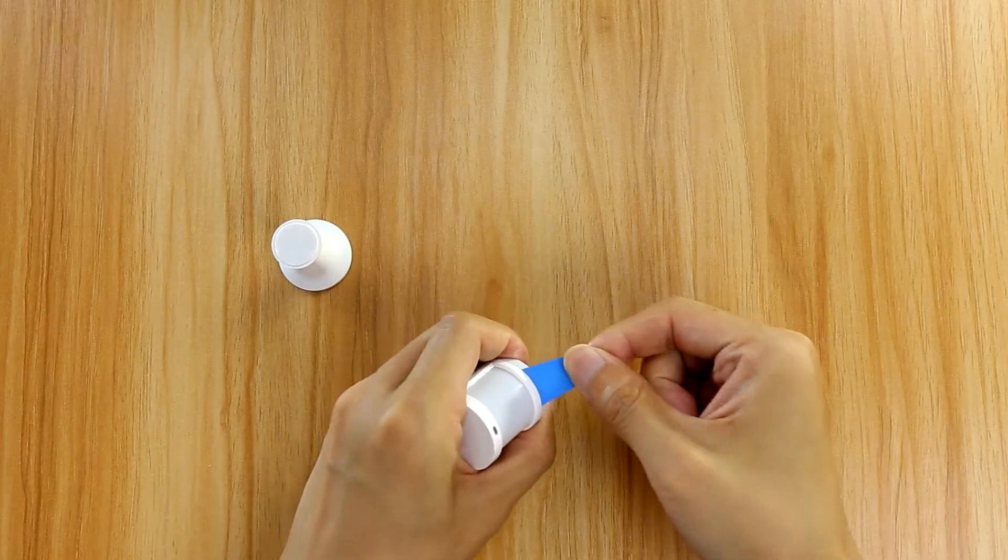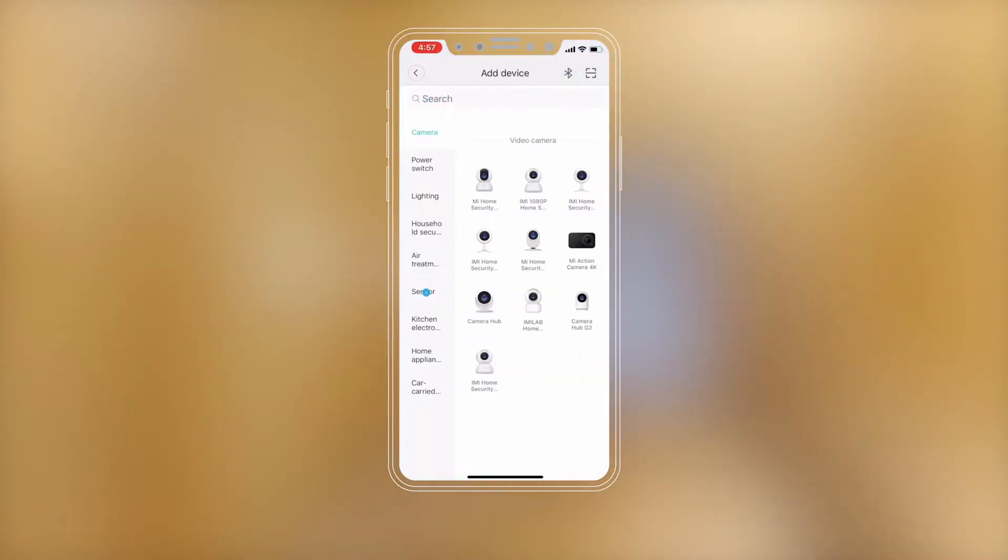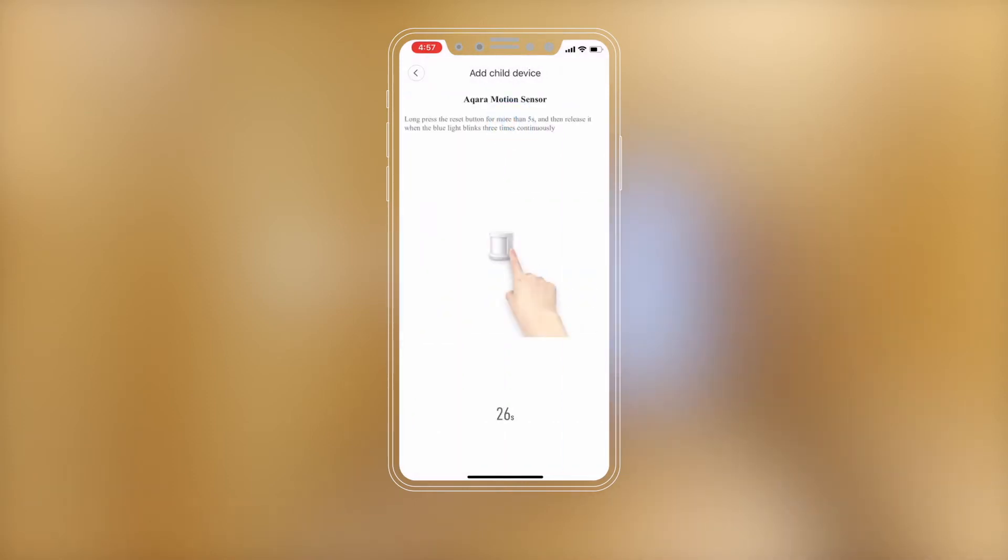Remove the insulation tab. Please open the Mi Home app. Press the plus to enter add device page and press the sensor. Select the Aqara Motion Sensor.